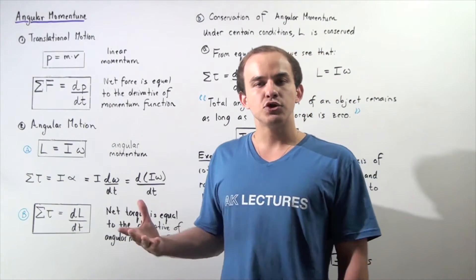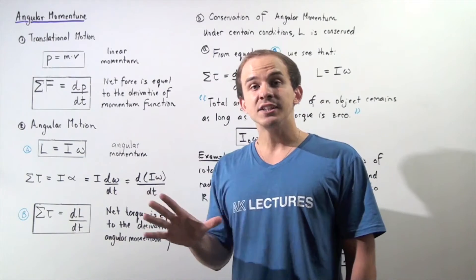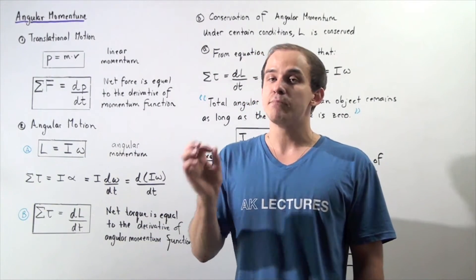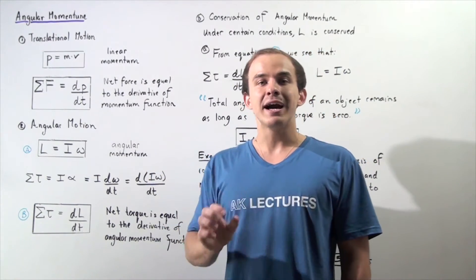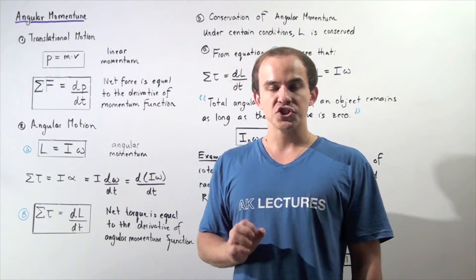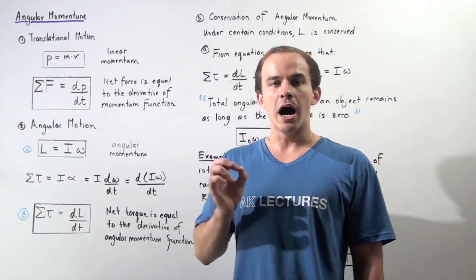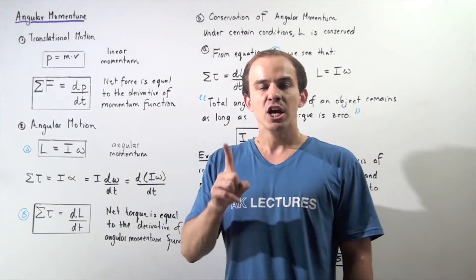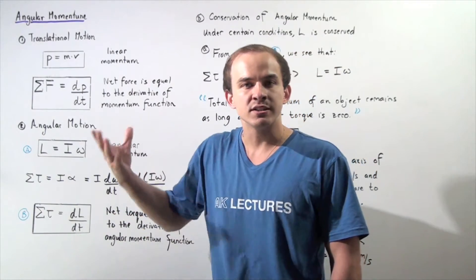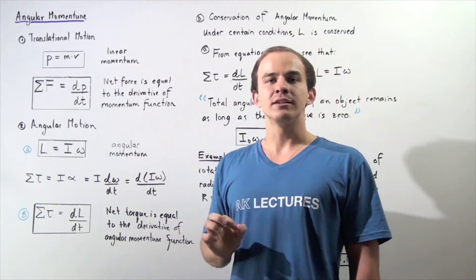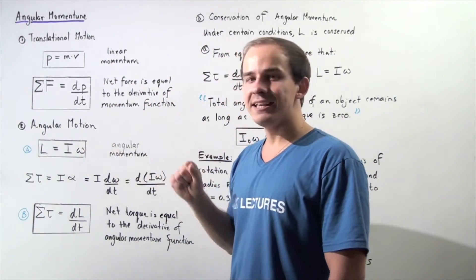Whenever an object is undergoing angular or rotational motion, that object also has momentum due to its rotational motion, known as angular momentum. Angular momentum is given by the capital letter L, and it equals the product of the moment of inertia and the angular velocity of the object — I multiplied by omega. To go from the linear to the angular equation, we simply replaced the translational quantities with angular quantities: mass with moment of inertia, and linear velocity with angular velocity.